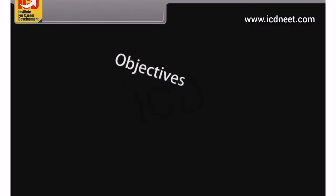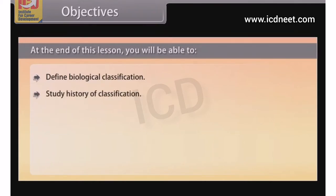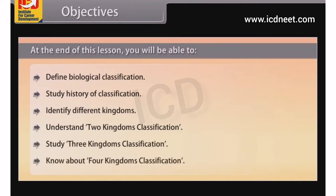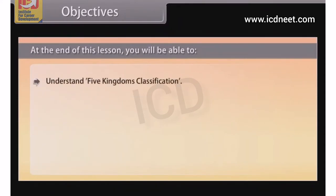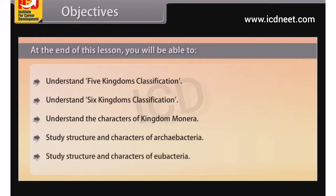At the end of this lesson, you will be able to: define biological classification, study the history of classification, identify different kingdoms, understand the two kingdoms classification, study the three kingdoms classification, know about four kingdoms classification, understand five kingdoms classification, understand six kingdoms classification, understand the characters of Kingdom Monera, and study the structure and characters of Archibacteria and Eubacteria.